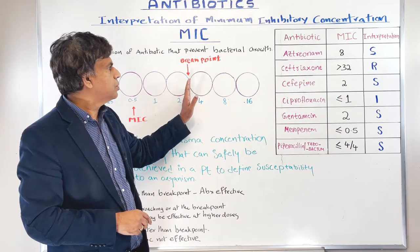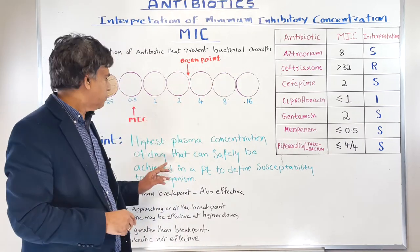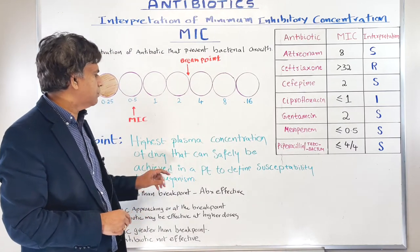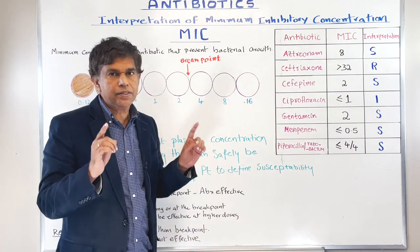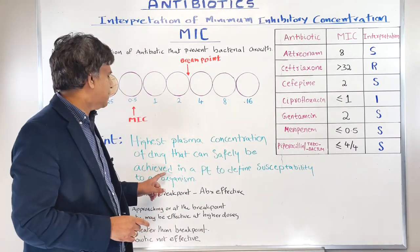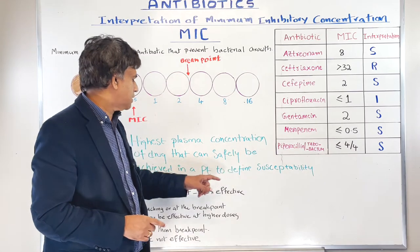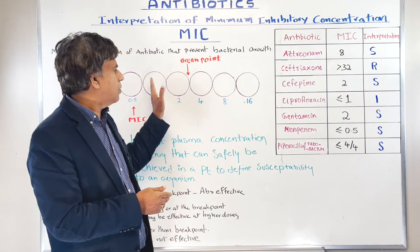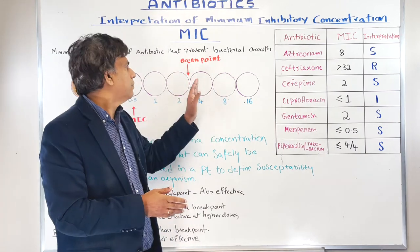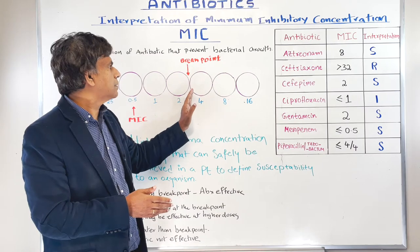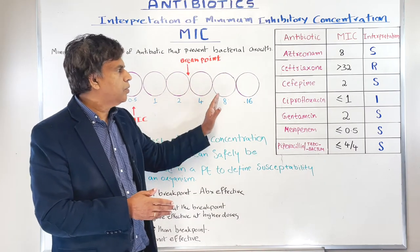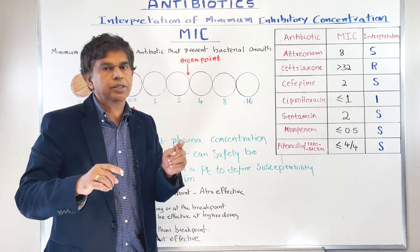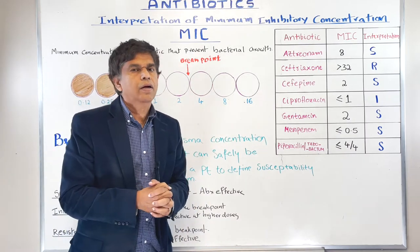There's something called a breakpoint. The breakpoint is the plasma concentration of drug that can safely be achieved in a patient to define the susceptibility of an organism. The key word is 'safely.' If you use concentrations above the breakpoint — say 3 or higher — you risk significant side effects and complications for the patient.